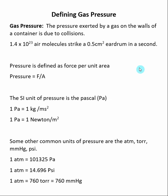Here we need to define gas pressure. Gas pressure is defined as the pressure exerted by a gas on the walls of a container due to collisions. We've already discussed how gases are moving at high rates of speed, so when these gases collide with the wall of a container there is a certain amount of force that is transferred.